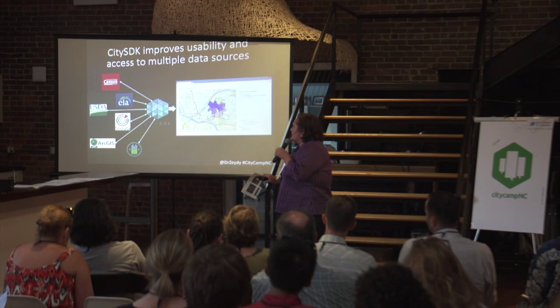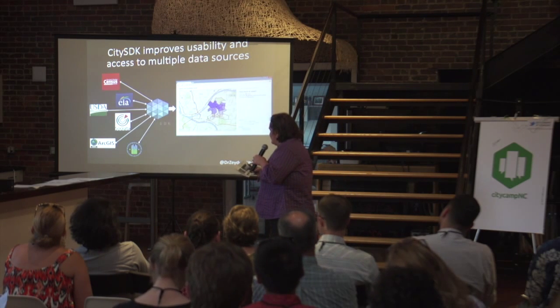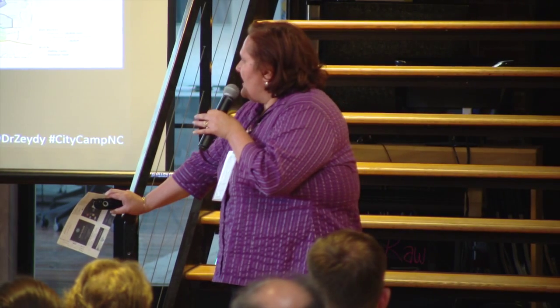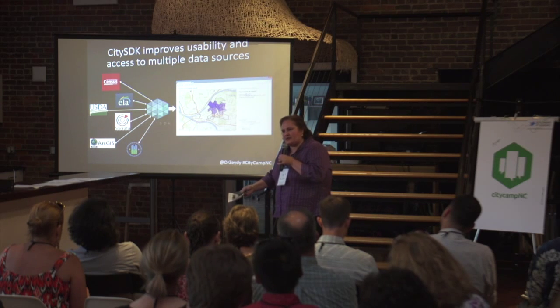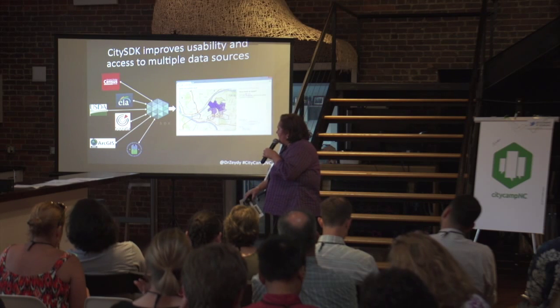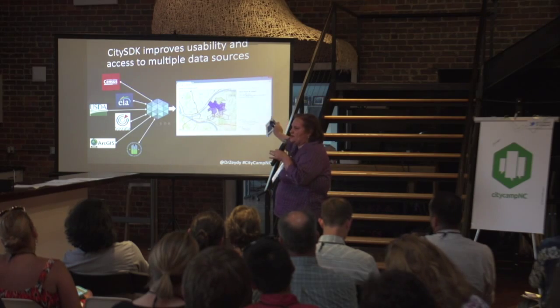In addition to the U.S. Census Bureau, they have also included modules with information from other data sets. For example, the Energy Information Administration has a module you can integrate, and there's also information from the USDA farmers market. They also have a module from Socrata, so all of the data sets from Socrata can be used with the CDSDK. They've opened it up on GitHub where you can expand the modules yourself. People from Esri have incorporated modules so you can use Esri data, and they've also included information from the Department of Housing and Urban Development.